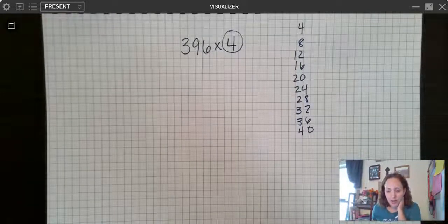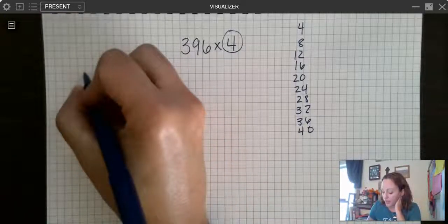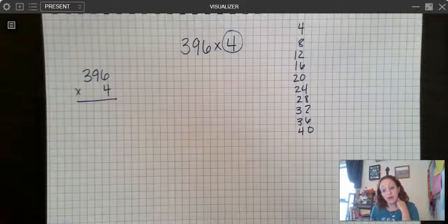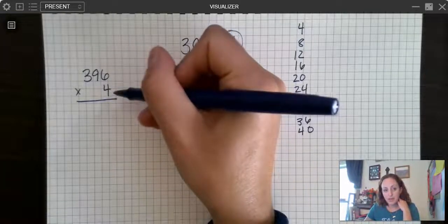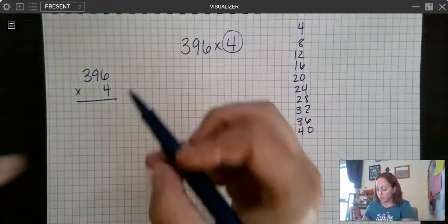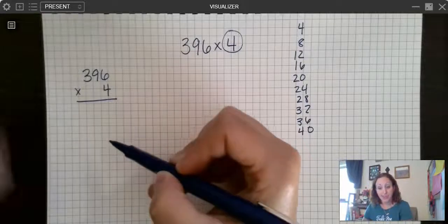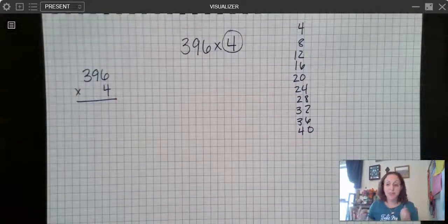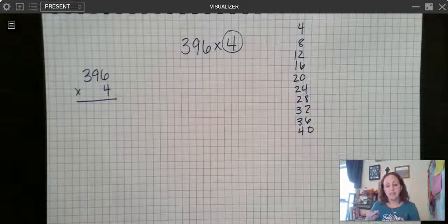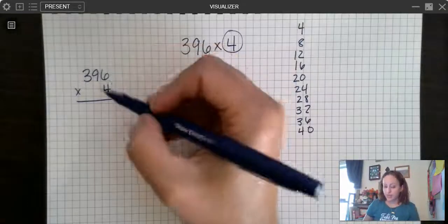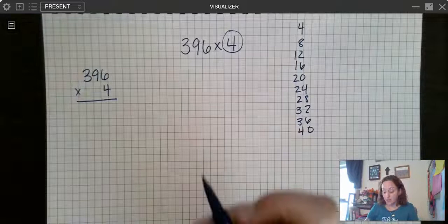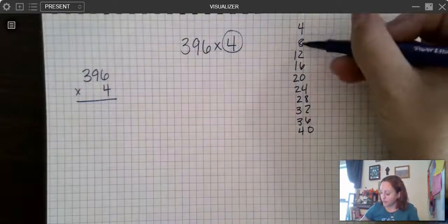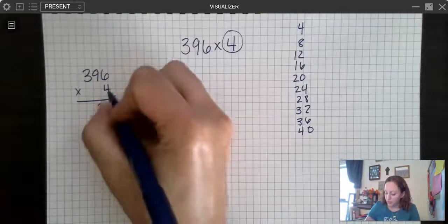So let's take a look at the standard algorithm for multiplication. When I'm doing my standard algorithm, I'm going to write the numbers just like I would if I were doing partial products. I have 396 times four. And also, just like with partial products, I am multiplying the four times everything up at the top. The difference is with partial products, I was listing each partial product down below and then adding together. With this, I'm adding as I go because I'm going to regroup. That's the biggest difference between the partial product strategy and the standard algorithm for multiplication. So let's take a look at it using partial products first, just as a reminder. So I'm going to start with four times six. This is the ones place. So I'm just saying four times six. Four times six is 24.